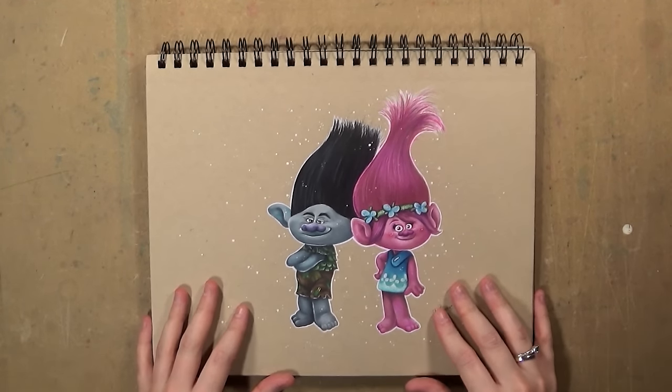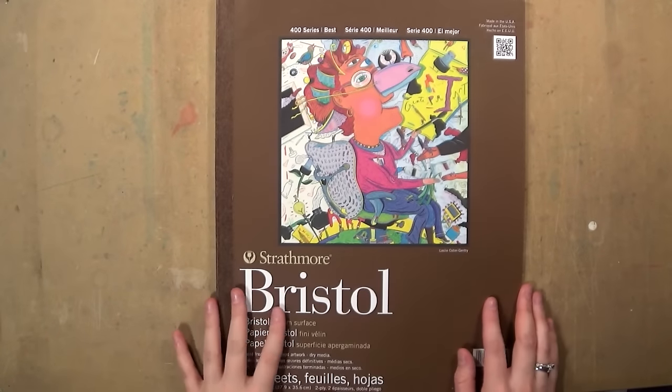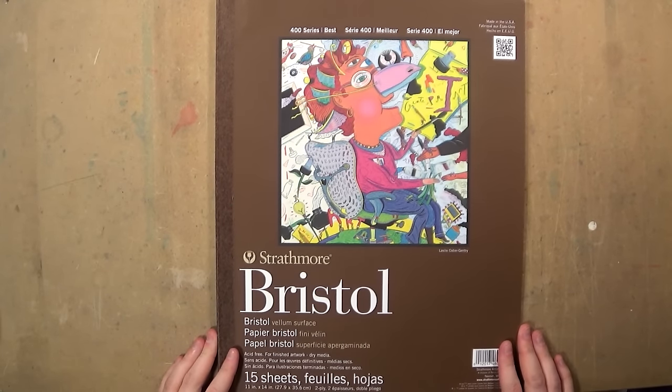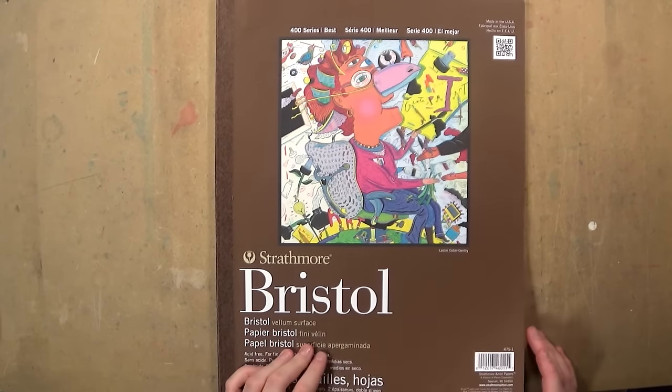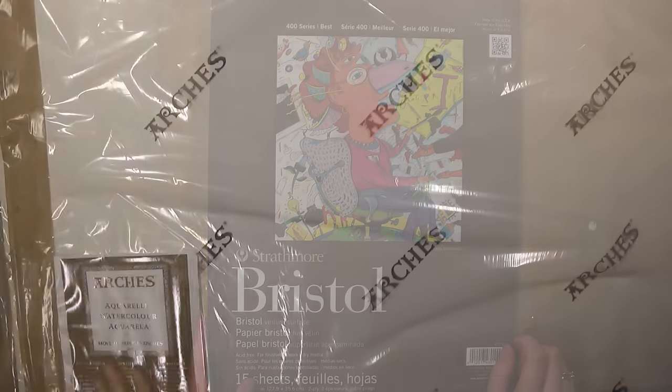The next type of paper that I'm going to tell you about is the paper that I use the most. I use this paper for all my realistic drawings and most of my colored pencil work. This is the Strathmore Bristol Vellum paper from the 400 series and this comes in 15 sheets. You just pull it out of the pad and then you can use them separately. I really like this paper, it's really nice and smooth.